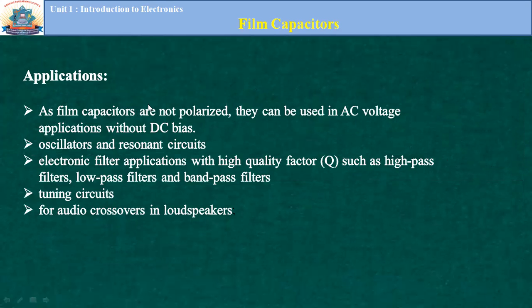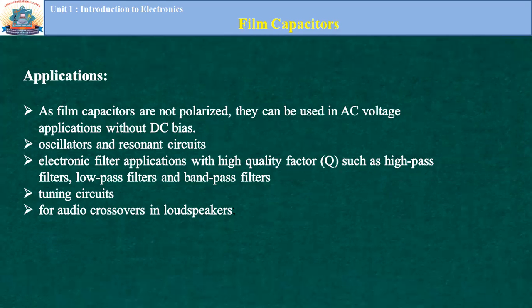Applications: as film capacitors are not polarized, they can be used in AC voltage applications without DC bias, including AC power supplies. They are used in oscillators and resonator circuits, electronic filter applications with high quality factor such as high-pass filter, low-pass filter, and wide-pass filter, as well as tuning circuits and audio crossovers in loudspeakers.